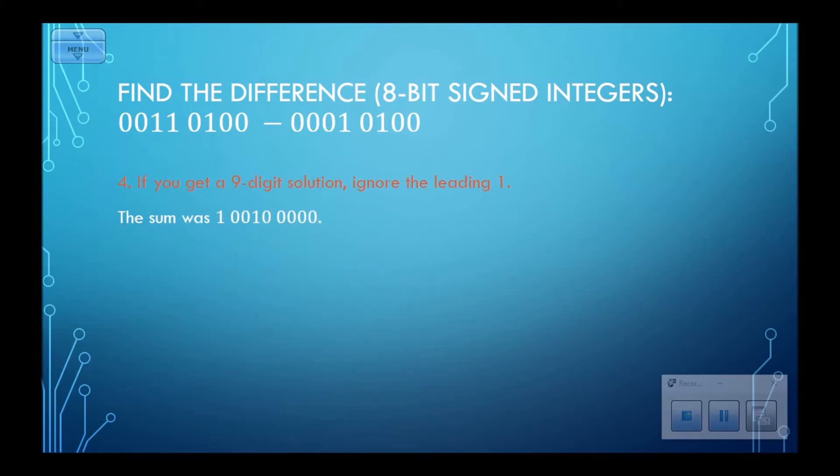If you get a nine-digit solution, ignore the leading one, done, ignored. So the difference of these two values is 0010 0000.